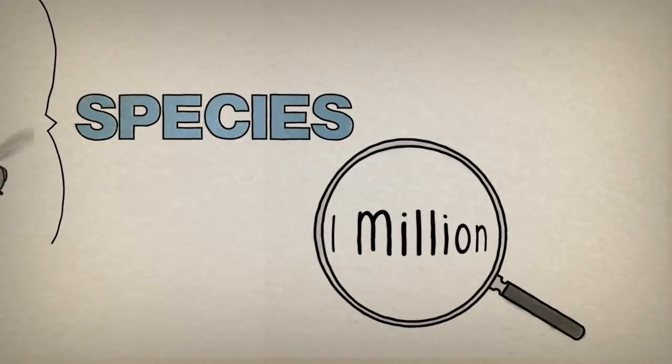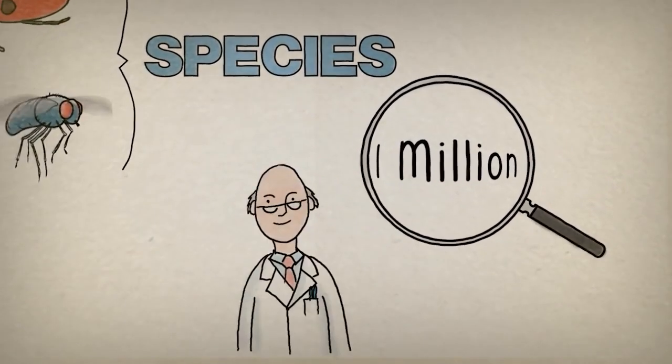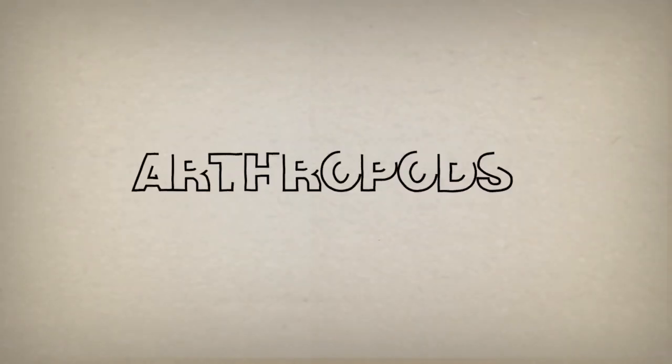We call these different types species, and around one million species of insect have been discovered so far, and scientists think there may be up to ten million species in total.